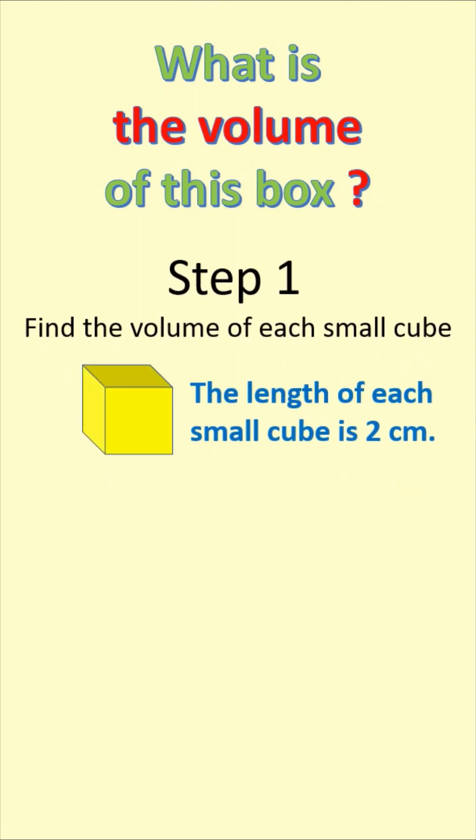The first step is to find the volume of each small cube. We can find the volume of a cube by multiplying the side length 3 times. That is 2 times 2 times 2, which is 8 cubic centimeters.